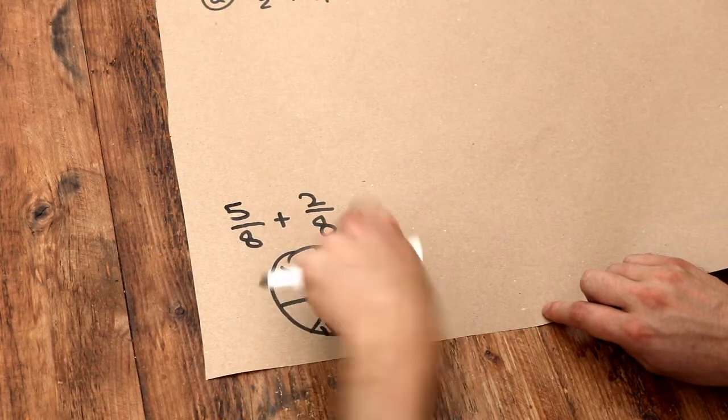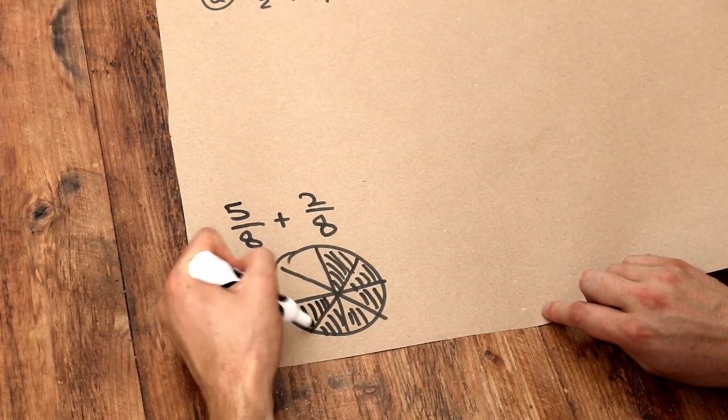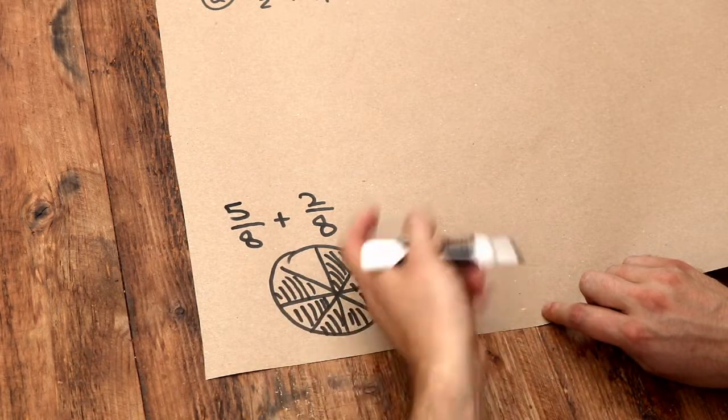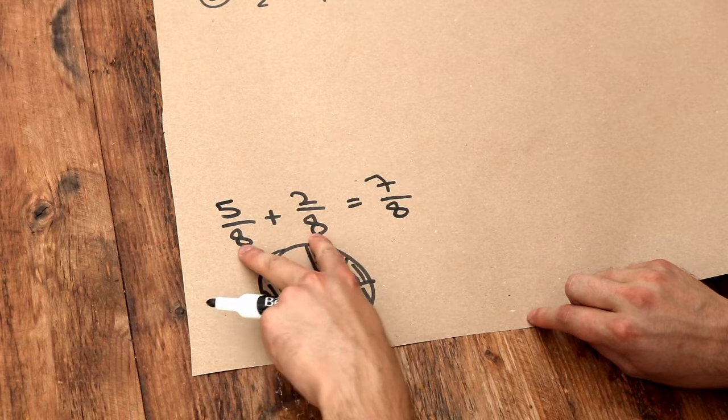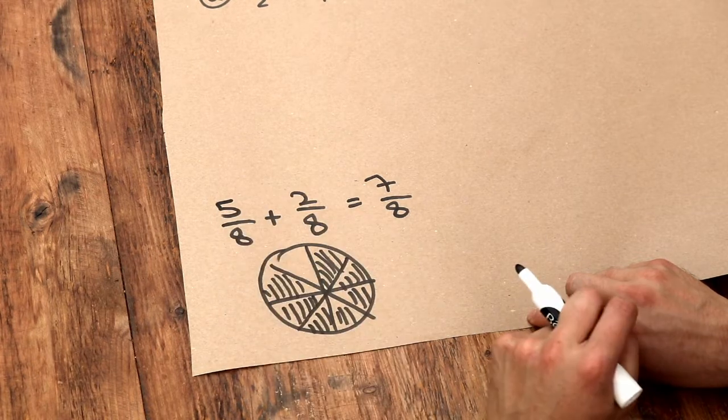And then if we were to take an additional two eighths, we have one two, in total we have seven of those eighths. So we can see when the denominators are the same then we can just add the numerators.